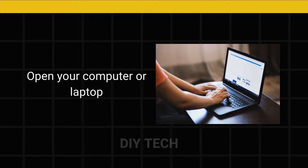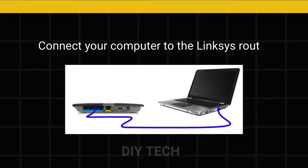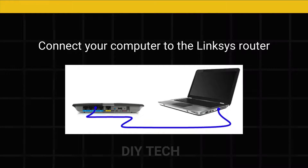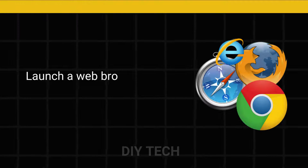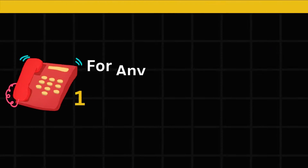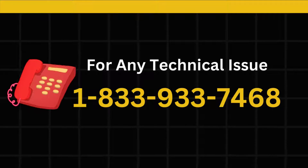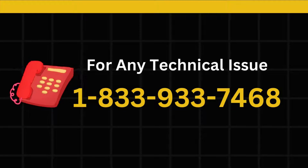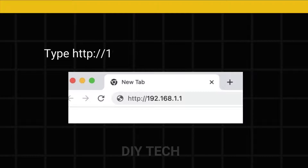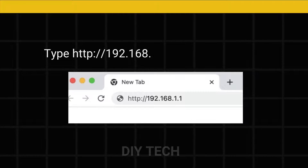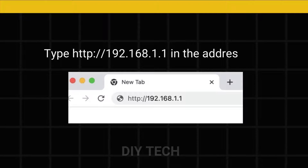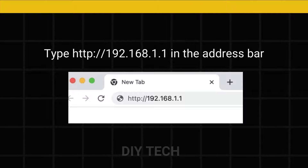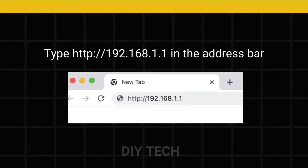Open your computer or laptop. Connect your computer to the Linksys Router. Launch a web browser of your choice. Type http://192.168.1.1 in the address bar.